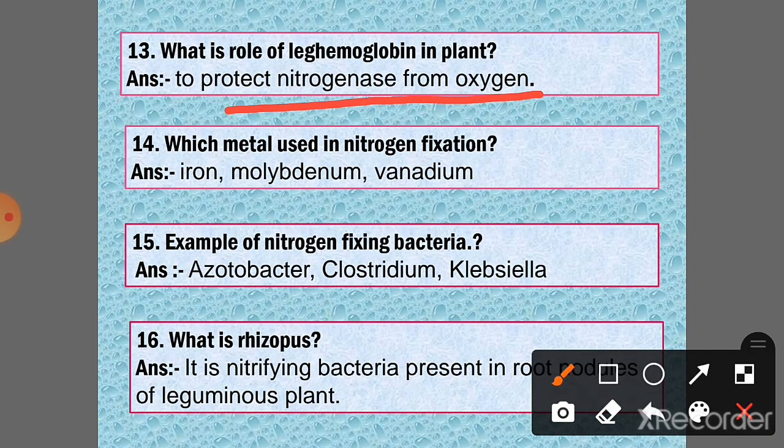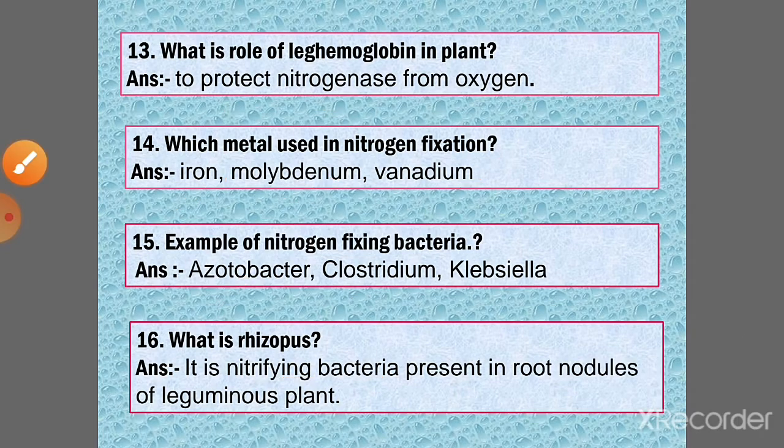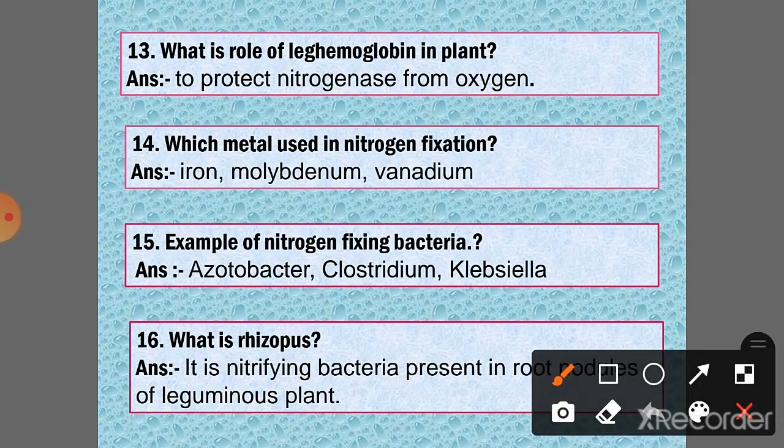Question 14: Which metal used in nitrogen fixation? Answer: Iron, molybdenum, vanadium. Question 15: Example of nitrogen-fixing bacteria. Answer: Azotobacter, Clostridium, Klebsiella. Question 16: What is rhizobium? Answer: It is a nitrifying bacteria present in root nodules of leguminous plants.